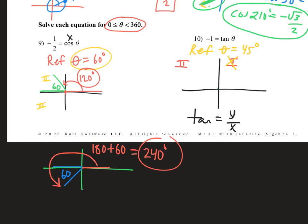If we put a 45-degree reference angle in quadrant 2 — reference angle always gets you to the x-axis — what would be the actual angle measure? The reference angle is 45 but what's the actual angle in standard position? We're 45 degrees less than 180, so one answer here would be 180 minus 45, which is 135 degrees.